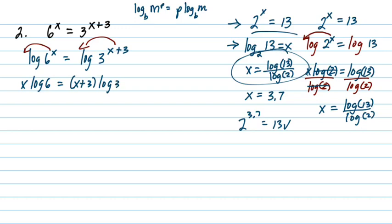And so we're going to end up with x log of 6 is equal to x plus 3 times the log of 3. Now, on the right, remember the log of 3 all goes together, and it's multiplied times this binomial x plus 3. You're going to have to distribute, so you end up with x log of 6 is equal to x log of 3 plus 3 log of 3. Alright, so you can see we have two terms with x in them.